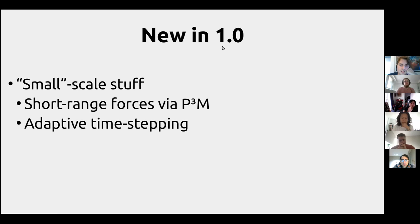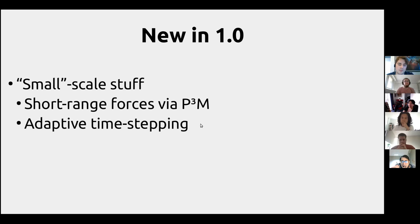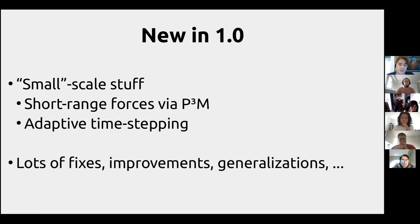So what does the 1.0 release mean? The code has been out for about five years in different versions. What's new is that I finally fixed the small-scale stuff — before, it only gave the right results on large scales due to missing so-called short-range gravity. That's now added using P3M, a gravitational solver. It also now has adaptive time stepping, meaning particles in dense regions have a smaller time step than particles in voids. And there are lots of other fixes and improvements.